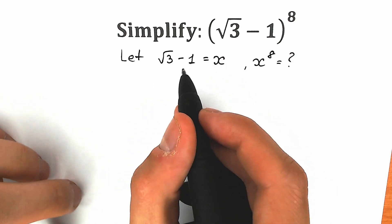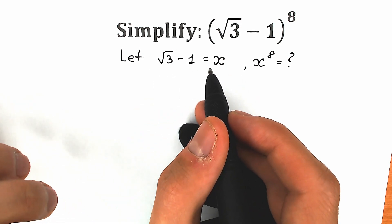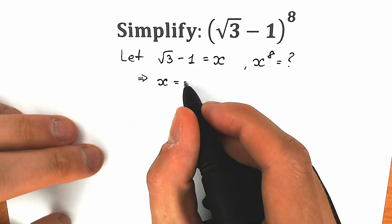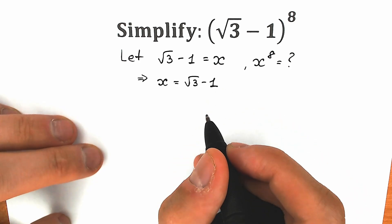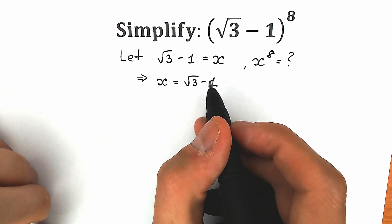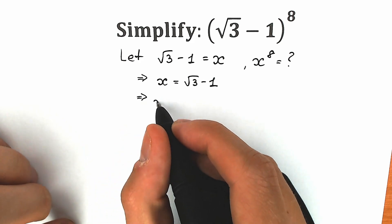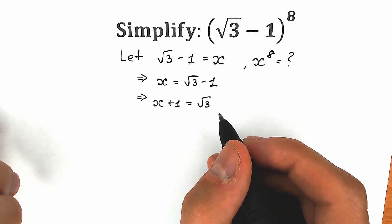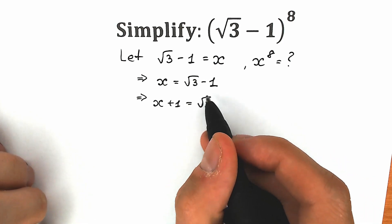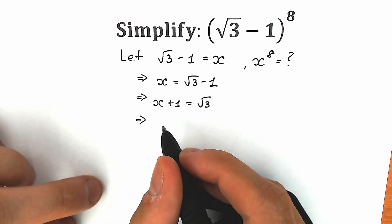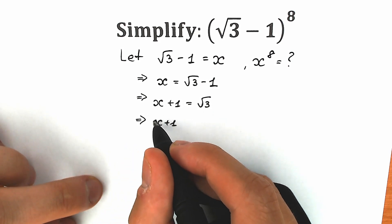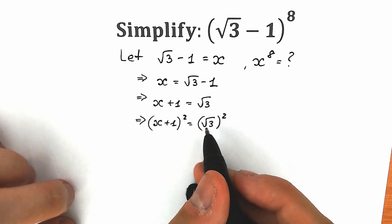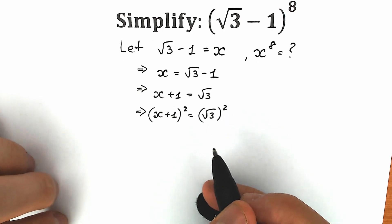Let's look closely at what we have. We have square root of 3 minus 1 equal to x. We prefer our variables on the left side, so let's write x equal to square root of 3 minus 1. Now let's bring the minus 1 to the left side, giving us x plus 1 equal to square root of 3. Now let's square both sides to cancel the square root sign.